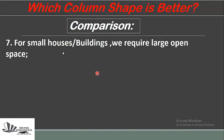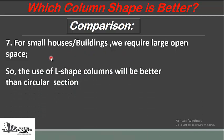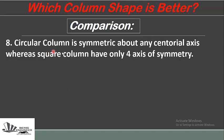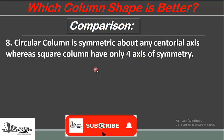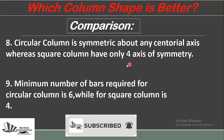For small houses and buildings where we require large open space, we prefer L-shaped columns rather than circular columns. Circular columns are symmetric about any centroidal axis, whereas square columns have four axes of symmetry.